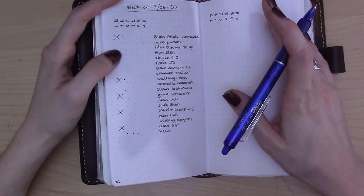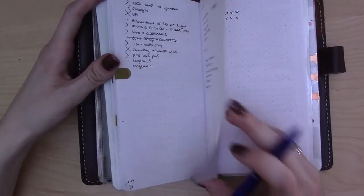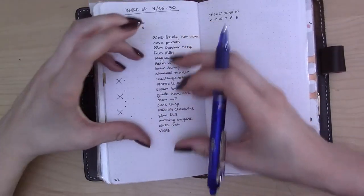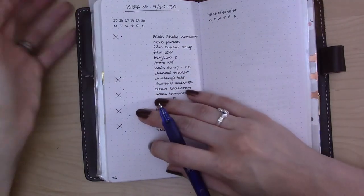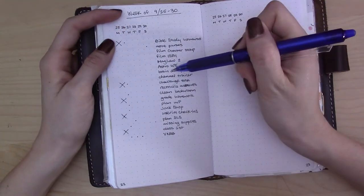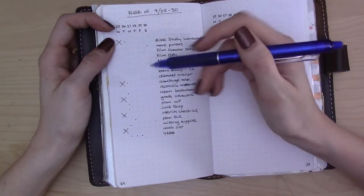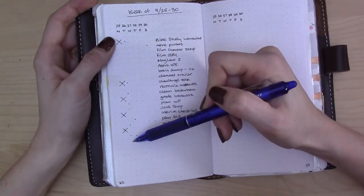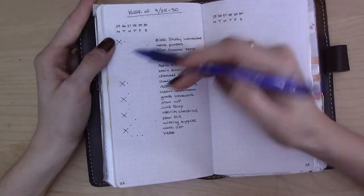If you missed yesterday's video, I set up this weekly spread for the last week of September even though I've been doing only dailies. I've started to feel like I didn't have a good grasp of what was coming up in my week without having somewhere to note things. For example, all of these things I've marked for Tuesday I already have decided that's what I'm gonna spend my Tuesday on.